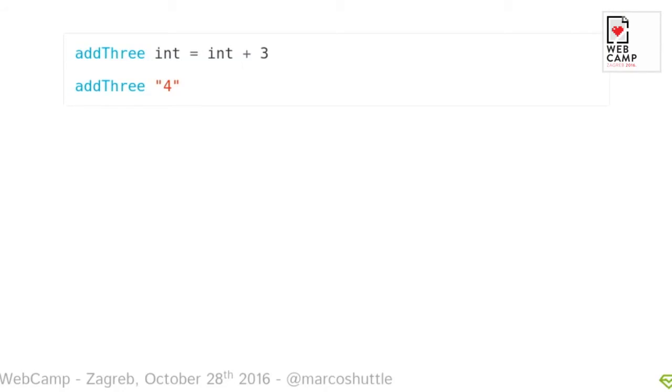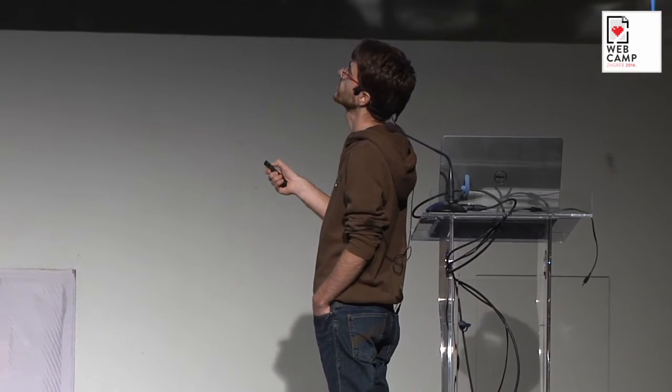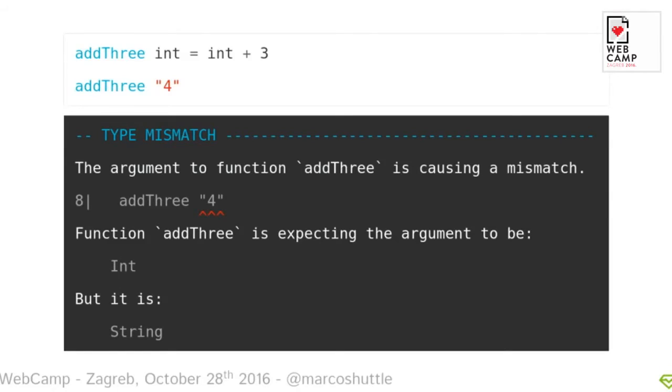Here's an example in Elm. I'm defining a function add3 that takes a parameter int and returns that int plus three — just a really simple function. What happens if I call add3 passing a string that contains the number four? Since Elm is strictly typed — meaning if you want to change a string to an integer you must do the casting yourself — the compiler will tell you: 'I was expecting an integer, but you gave me a string. That's not correct.' And you get that information immediately.